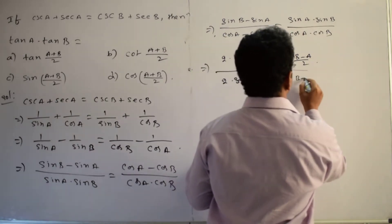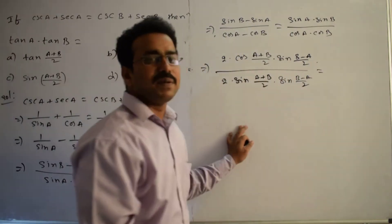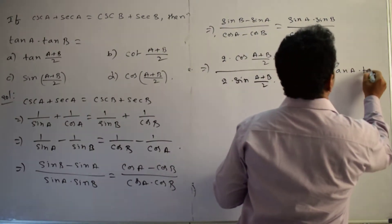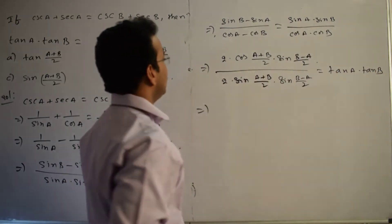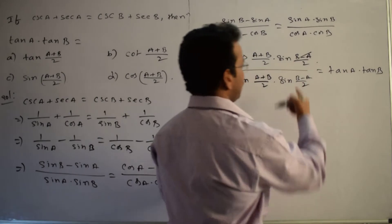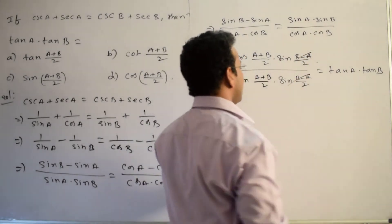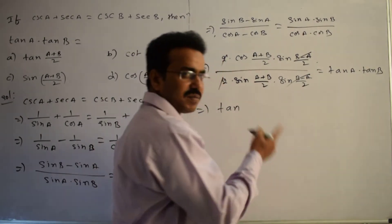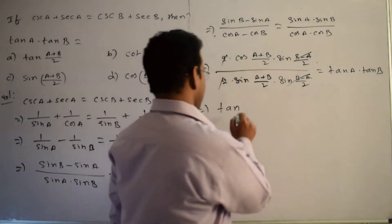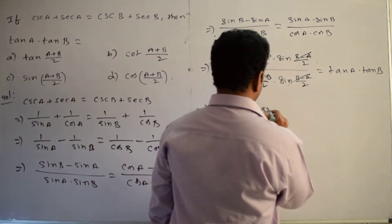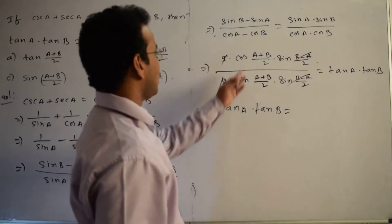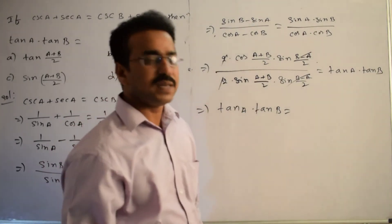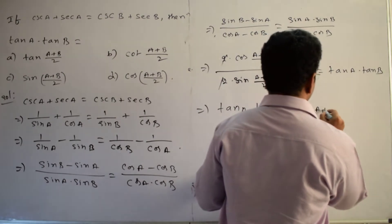This equals sin A/cos A · sin B/cos B, which is tan A · tan B. The 2s and the sin((B-A)/2) terms cancel in numerator and denominator, leaving cos((A+B)/2)/sin((A+B)/2), which equals cot((A+B)/2). So tan A · tan B equals cot((A+B)/2).